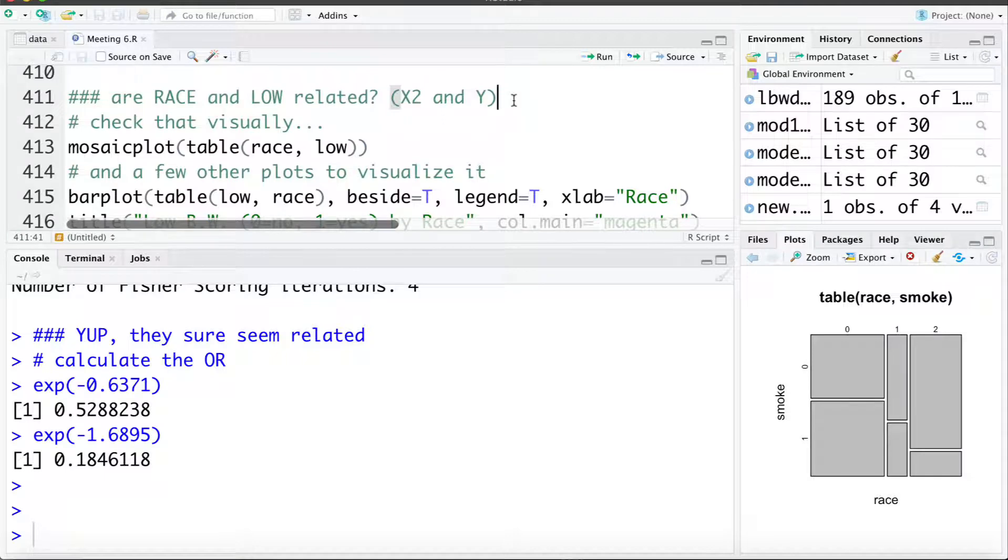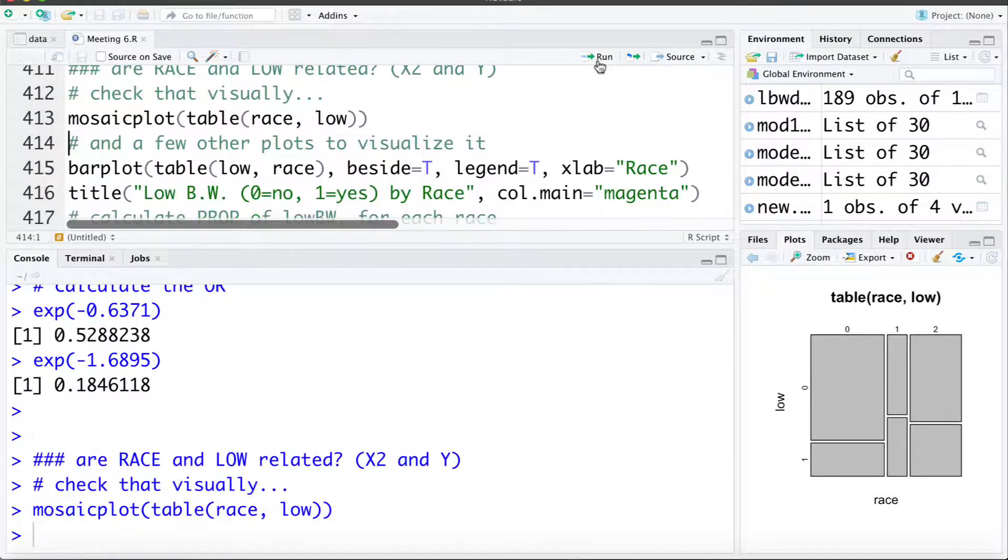Now we also want to check if race and the outcome, low birth weight, are associated. So is x2 and y associated? Again we can check that using a mosaic plot since they're both categorical variables. Let's take a look at that here. And again we can see there is an association.